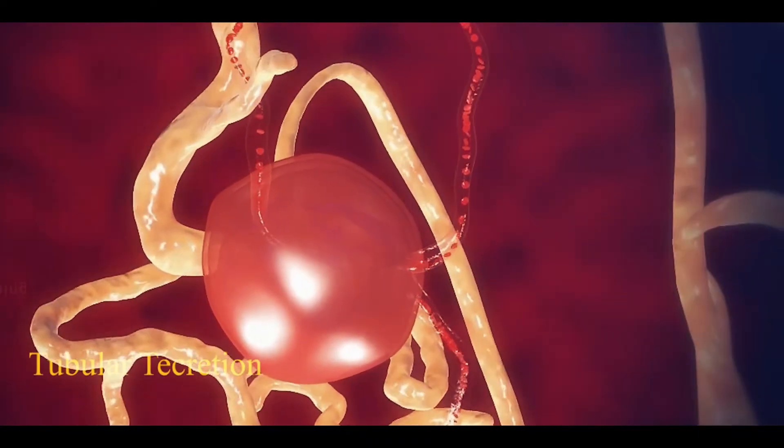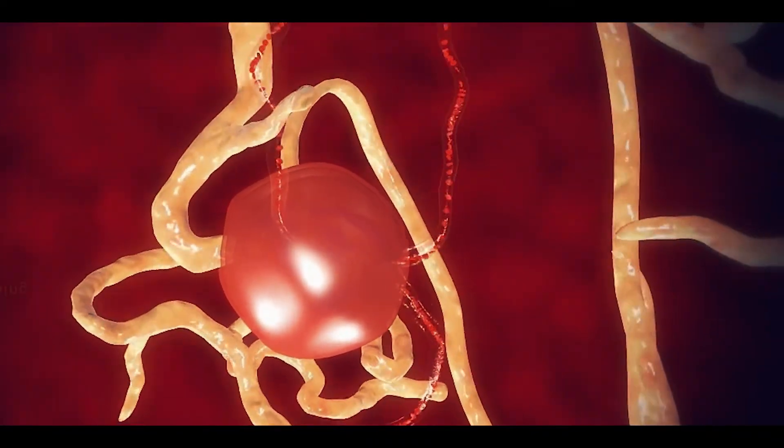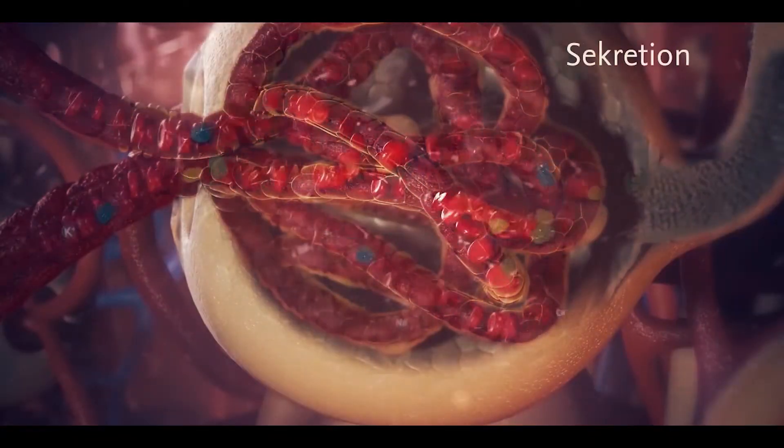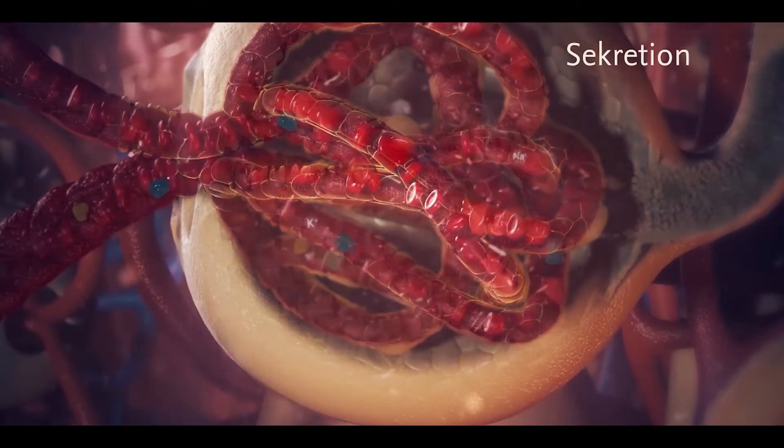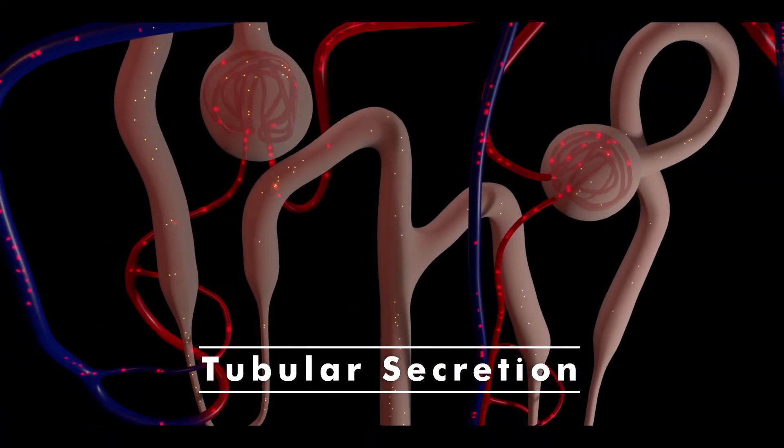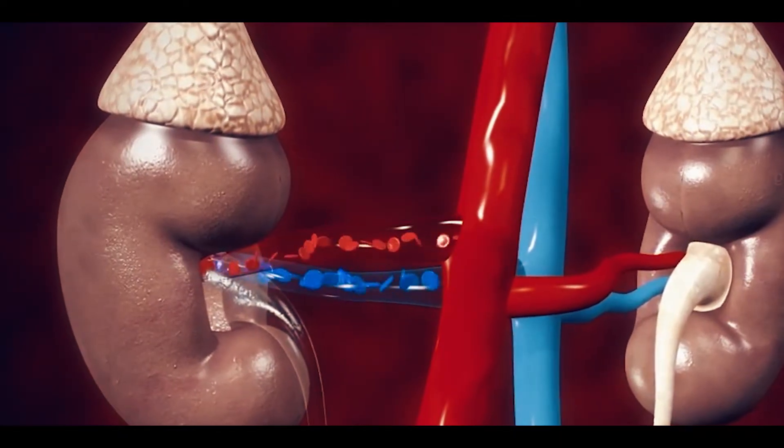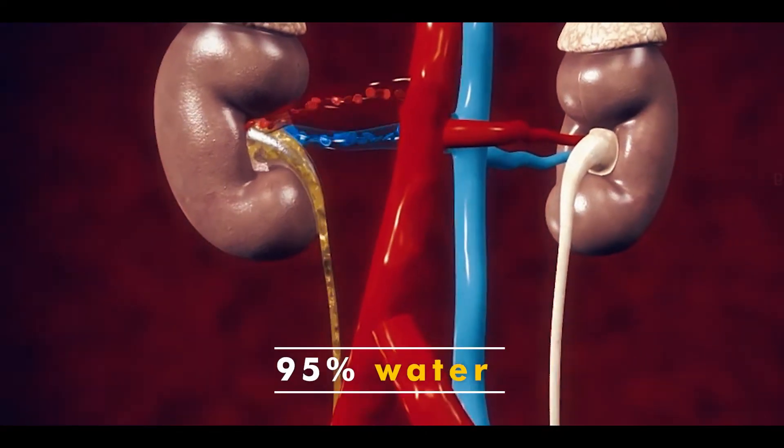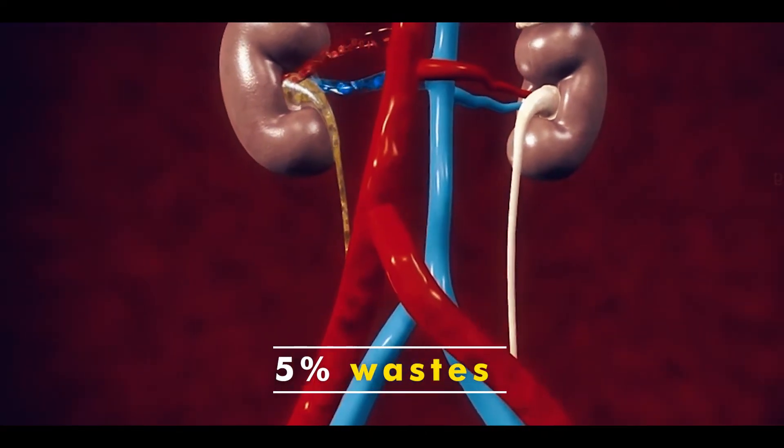In tubular secretion, while water and solutes are reabsorbed into the blood on one side, remaining wastes also enter the nephron tubules from blood on the other side. At the end of this process, wastes and water combine to form urine, which contains 95% water and 5% wastes.